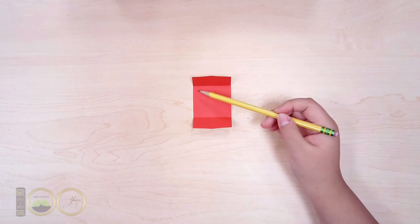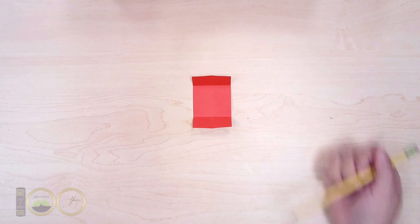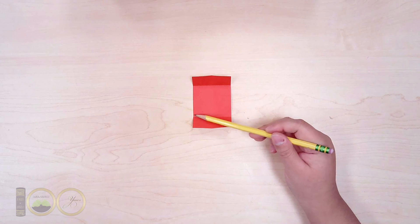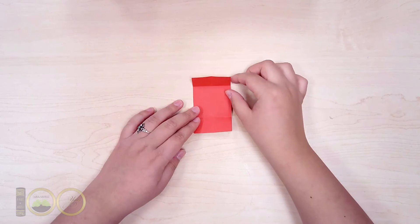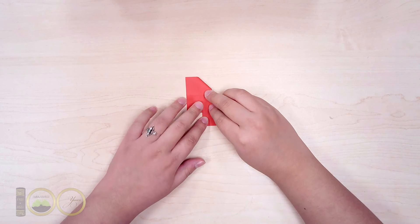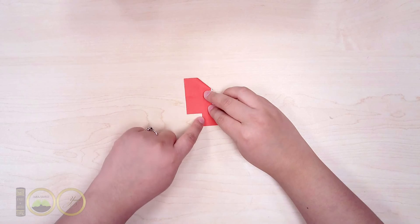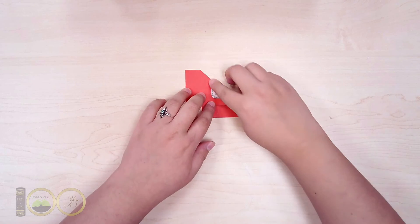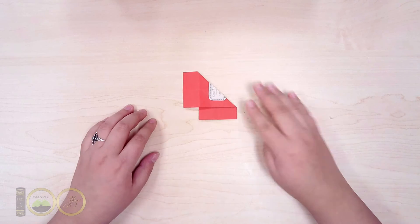With this newly created square in the middle of the paper, take the top right corner and fold it diagonally to the bottom left corner. Try to do your best to align this line with the edge of the paper. Then unfold.